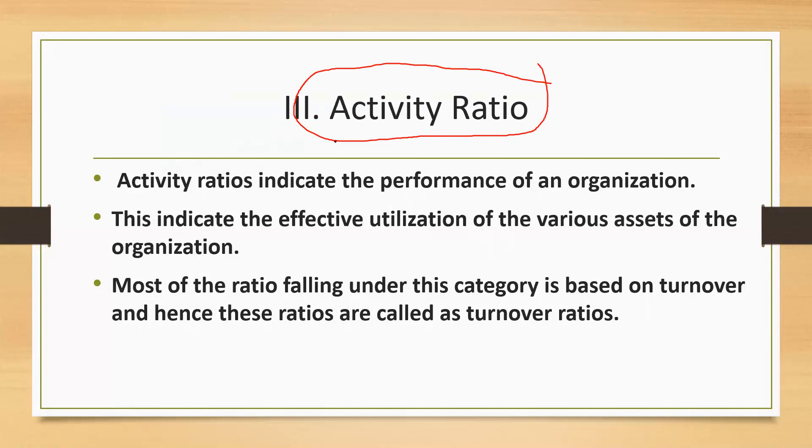So when we talk about activity ratios, activity ratios generally indicate the performance of organization, that how well the organization is performing with the investment done in it, or we can say how well it is utilizing its assets. Generally these ratios involve turnover, and turnover means sales in that, so they are also known as turnover ratios.